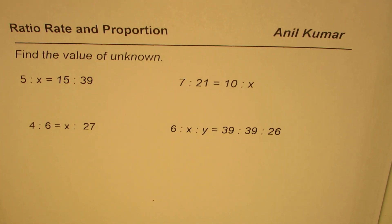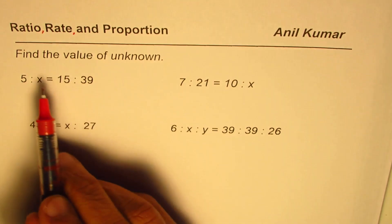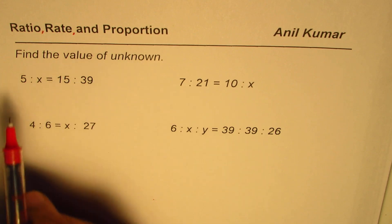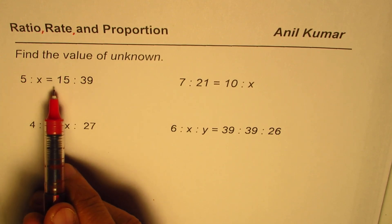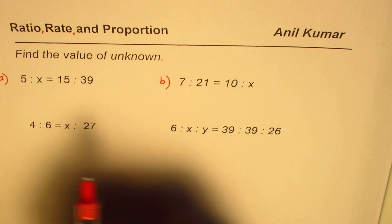I'm Anil Kumar and here is a question on ratio, rate, and proportion. Find the value of unknown. 5 is to x equals to 15 is to 39, that's question number one. Part b of this question...